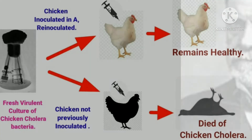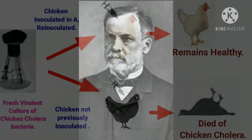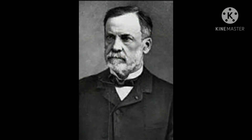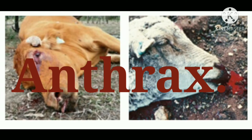Following the success of the chicken cholera vaccination experiment, Pasteur focused on the microbial origin of disease. Pasteur began investigating anthrax.